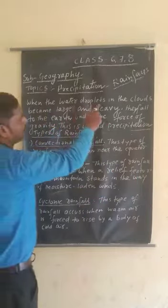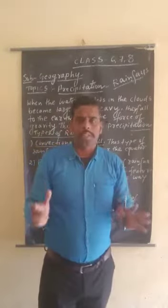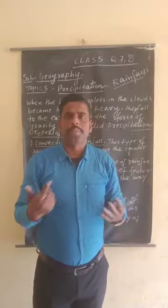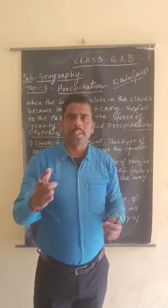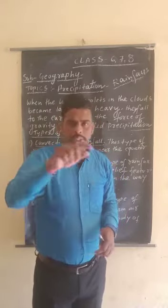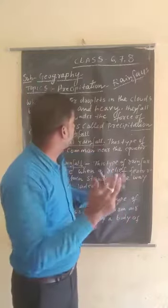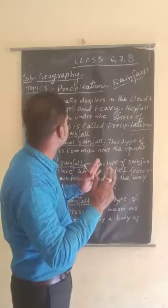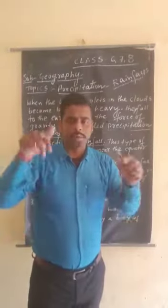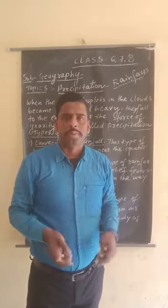When water becomes vapour — which is known as evaporation — it goes up from the earth. The vapour is then condensed and becomes heavy, and falls back to the ground. This is also known as precipitation.